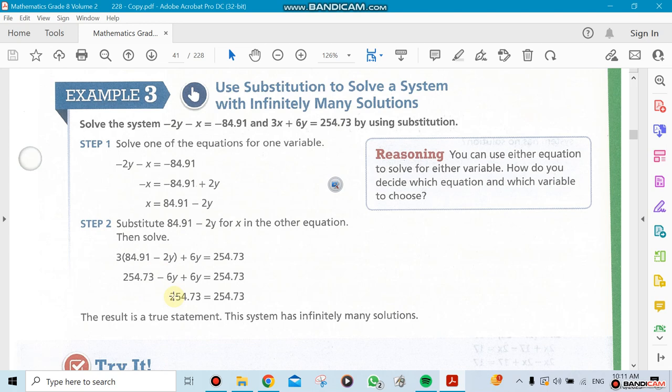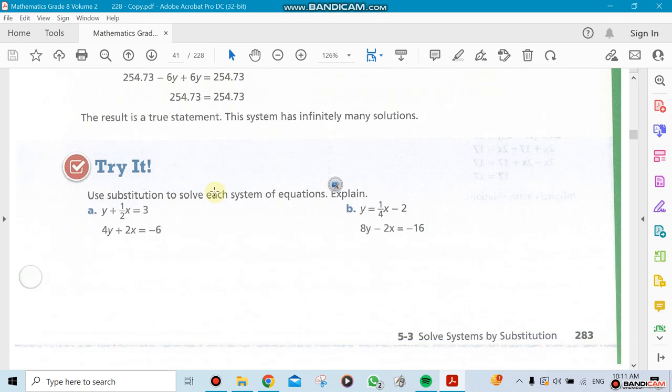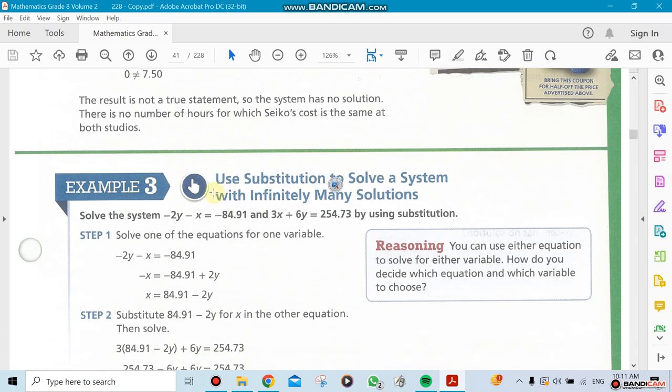So now y ended up to be 254.73 and 254.73. That means any value that I plug in for y, I would get the same answer no matter what. If I chose y to be 100, I'll still get the same answer. If I chose y to be 1, 2, 3, or 5, I'm going to get the same answer. That's what we mean by substitution and getting a result as infinitely many solutions.